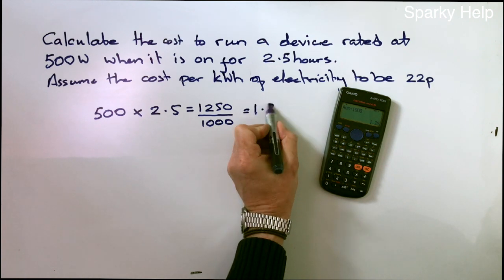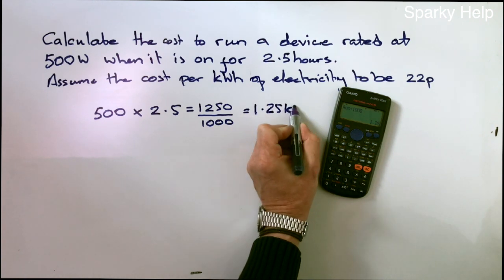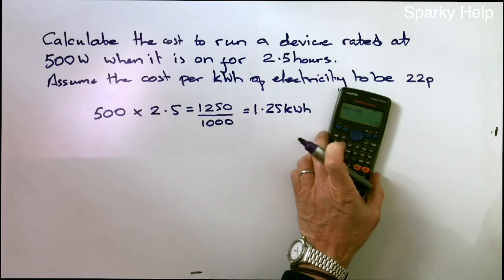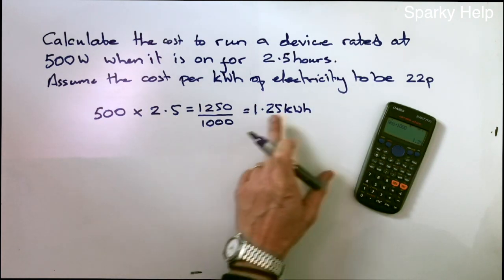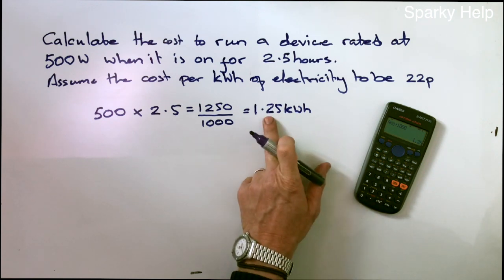So what we're actually using is 1.25 kilowatt hours. So it's watts times the hours, and then divide your answer by 1000. So we're now using 1.25 kilowatt hours. And that is what your meter would go up by.